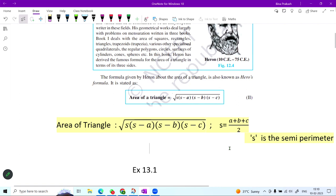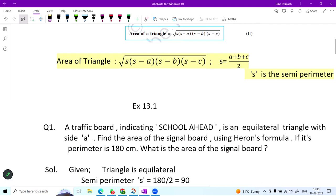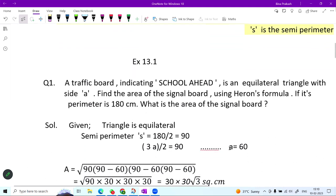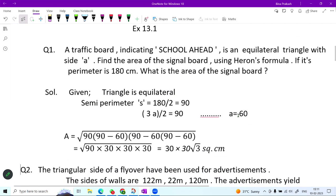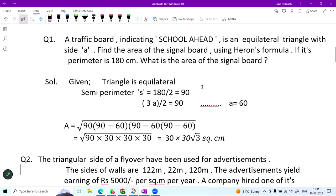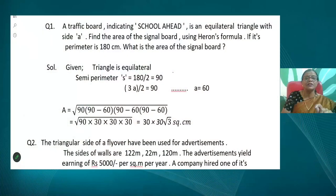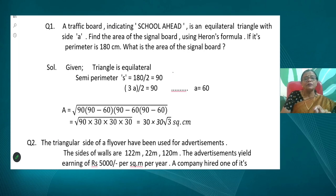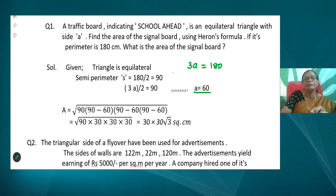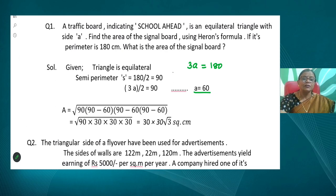We can use this formula to compute the area of any triangle. The first question from the NCERT textbook says: a traffic board indicating 'School Ahead' is an equilateral triangle with side a. Find the area of the signal board using Heron's Formula. The perimeter is given as 180 centimeters — what will be the area? Since the triangle is equilateral, all three sides are equal. The semi-perimeter s = 180/2 = 90. Since all three sides are equal, 3a = 180, so the measure of each side is 60. This chapter is based on computation, so be very alert in calculation.